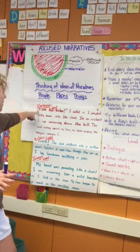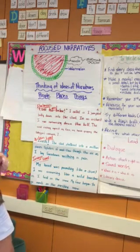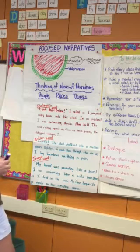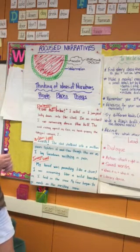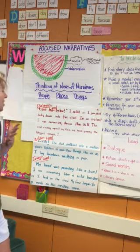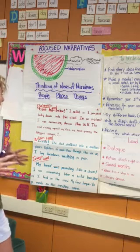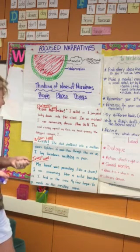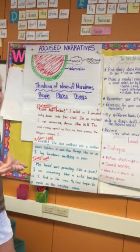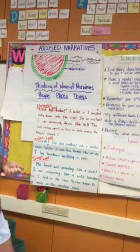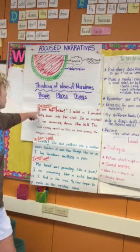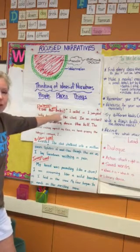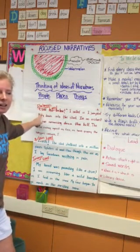The first was with dialogue. "Look out below!" I called as I jumped belly down onto the sled. In an instant I was careening down the hill, the wind rushing against my face, my hands gripping the toboggan sideboards. Don't you want to know what's going to happen? That was a great way to start — he started with dialogue.